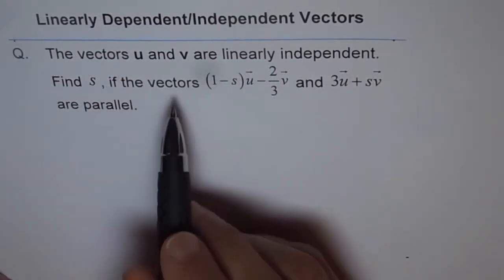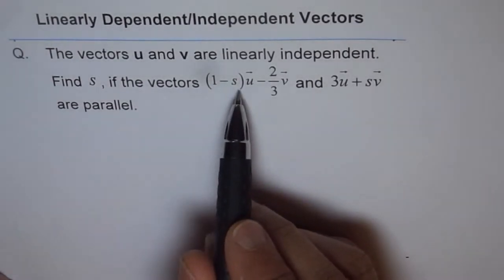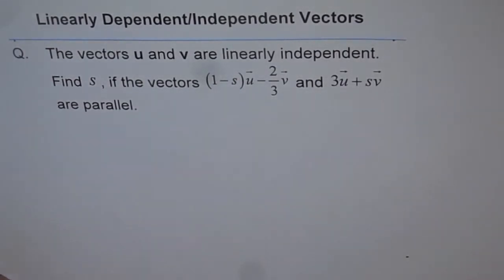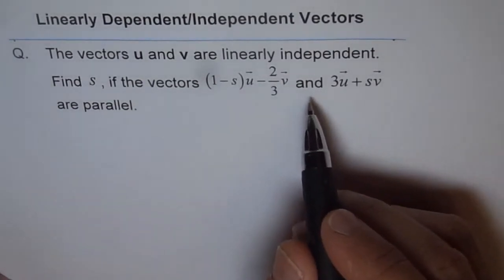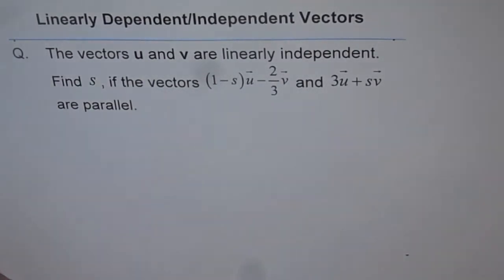Find s, if the vectors (1-s)u minus 2/3 v and 3u plus sv are parallel.